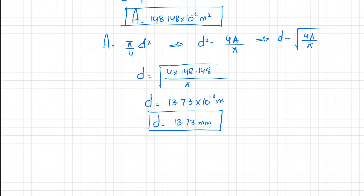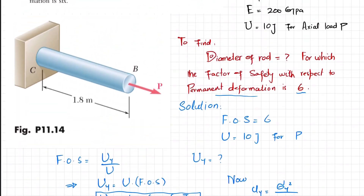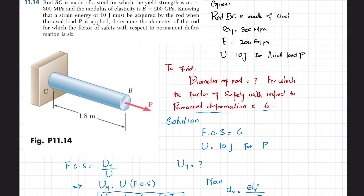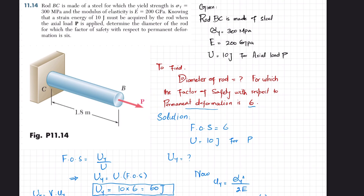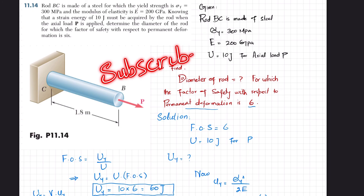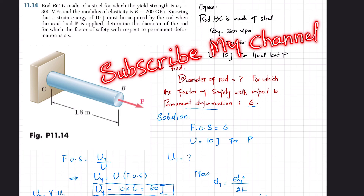This is the diameter of rod CB for the given condition for permanent deformation and for a factor of safety of 6. I hope you enjoyed the video — please subscribe to my channel and keep watching. Thank you.